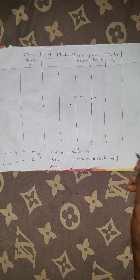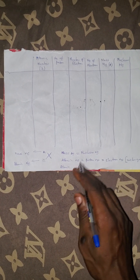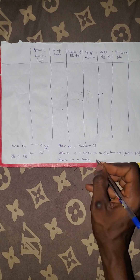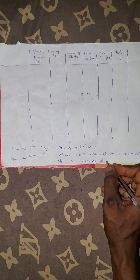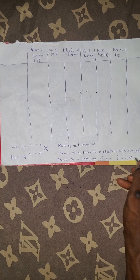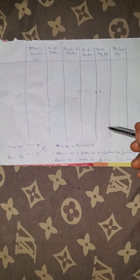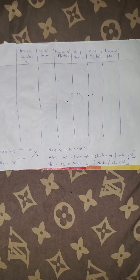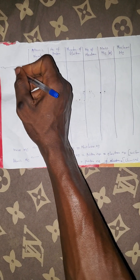If the element has no charge, these three — atomic number, proton number, and electron number — are the same. But if the element is charged, then atomic number only equals proton number; it will not be equal to electron number, because the charge on that atom will affect the electron number.